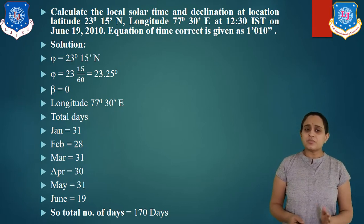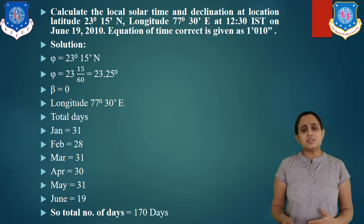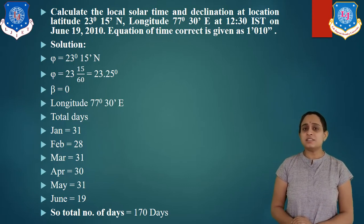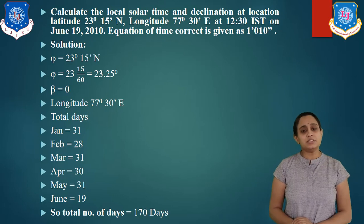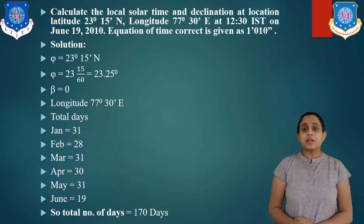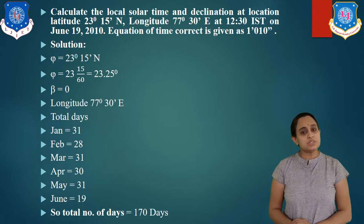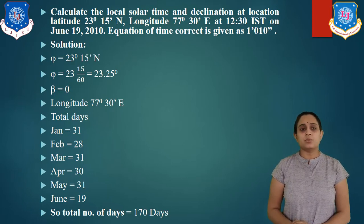Another given value is the longitude angle, that is 77 degree 30 minutes east. And the beta value is equal to 0. Now let us start.